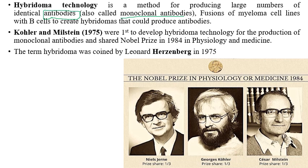The fusion of myeloma cell lines with B-cells creates hybridomas. Myeloma cells are fused with B-cells to produce hybridomas, which are highly specific and can produce antibodies — Y-shaped immunoglobulin structures produced inside the body that can identify a specific antigen and trigger immune responses. This technique was first discovered by Köhler and Milstein for the production of monoclonal antibodies, and they shared the Nobel Prize in 1984.